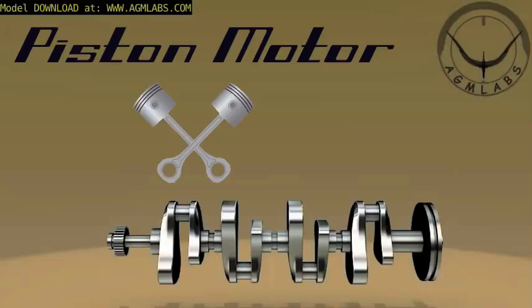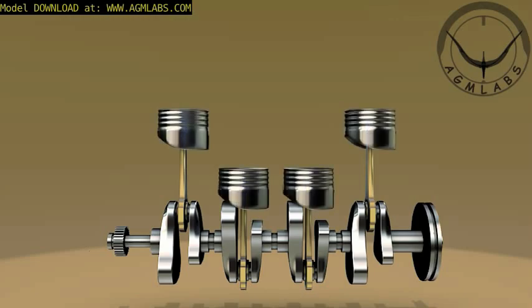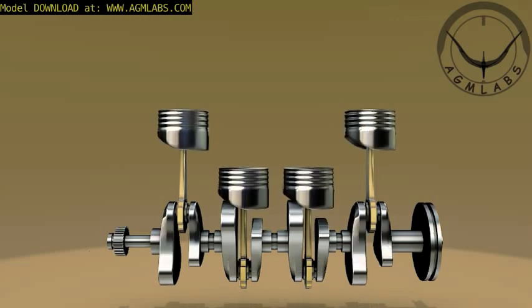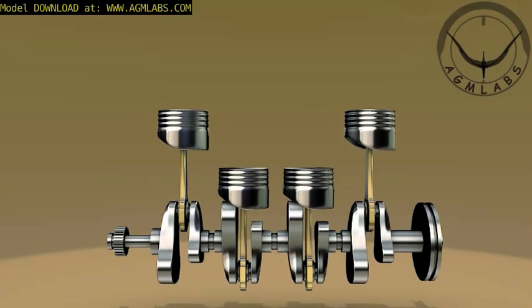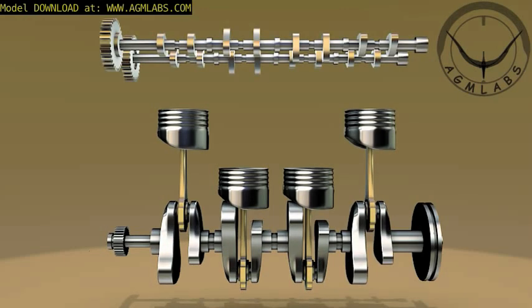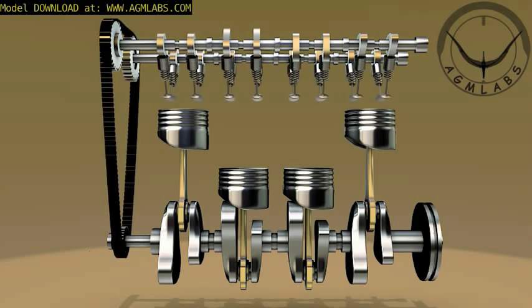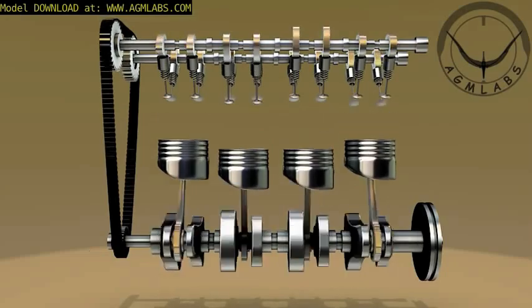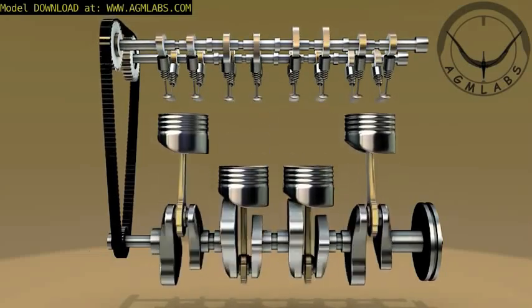Inside the engine block, there is a crankshaft. Piston rods are attached to the crankshaft, and pistons are attached to the piston rods. As the crankshaft turns, it causes the lifter to make each piston move up and down. At the top of the crankshaft there is a camshaft, which is connected to the crankshaft by a timing belt. While the crankshaft is making the pistons move up and down, the camshaft is turning, making the valves open and close.